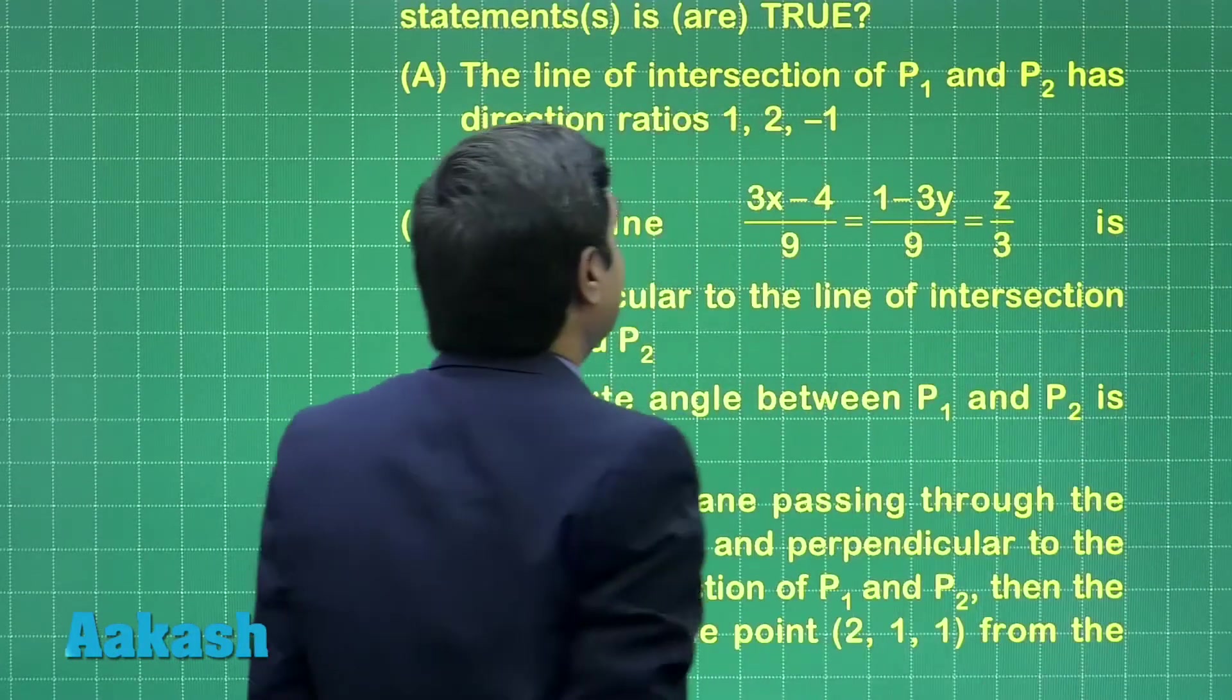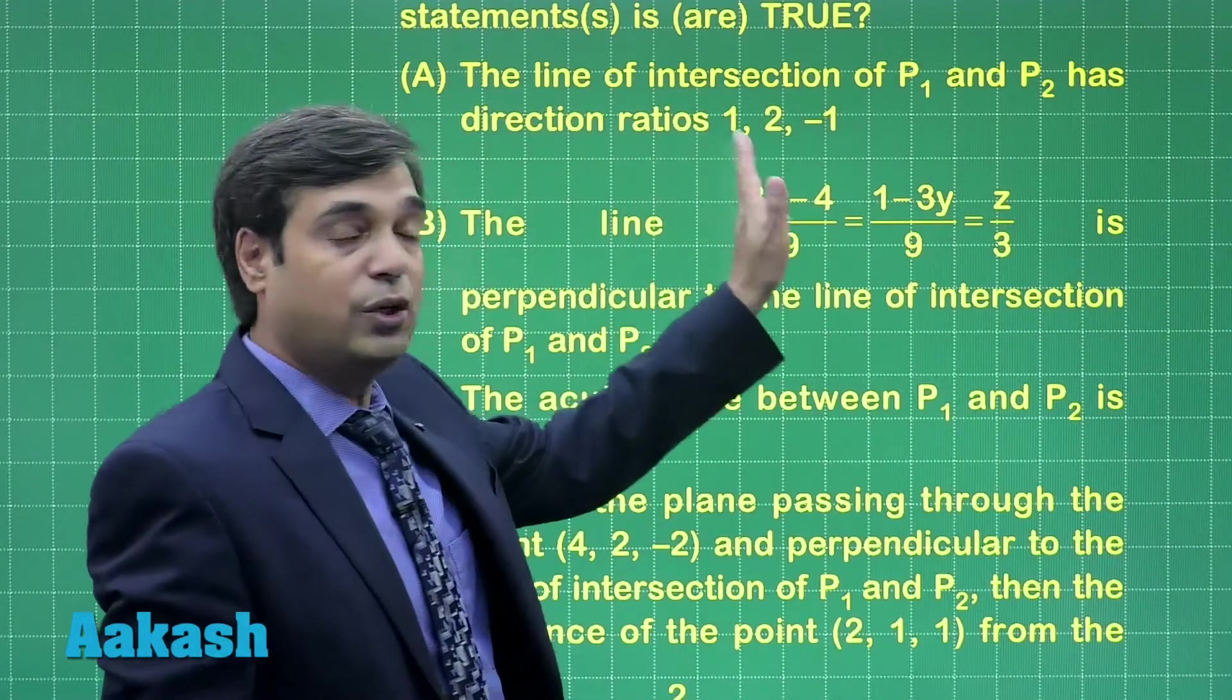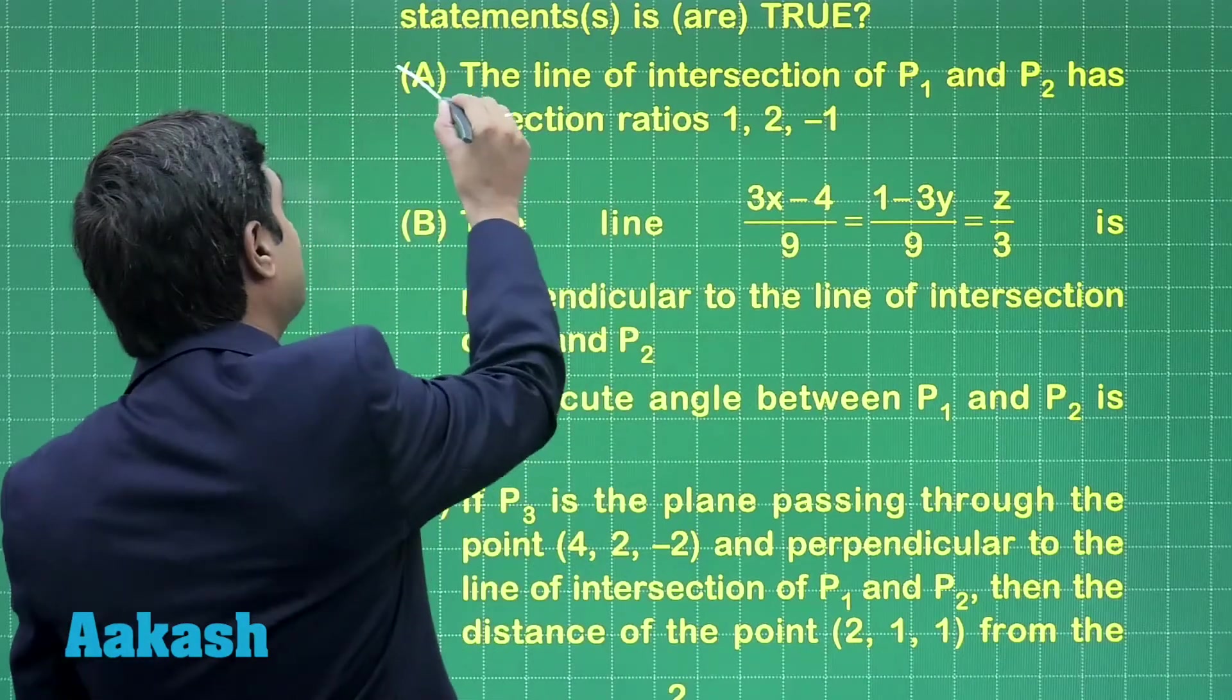Option 1 says the direction ratios are 1, 2, minus 1, so clearly this option is wrong.